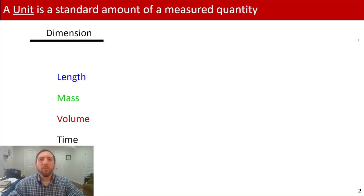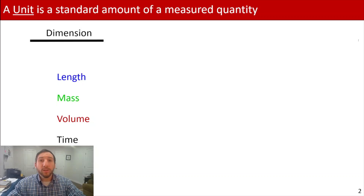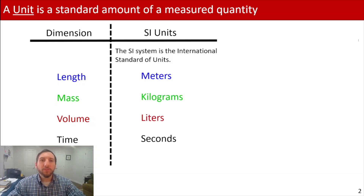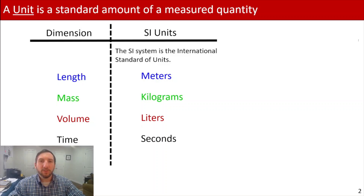And when we measure these things using units, there are actually a couple of different systems of units that we could be using. For example, we could be using SI units, and SI units are the international standard of units. That's when we see, for example, meters, kilograms, liters, or seconds — and that's called the metric system.